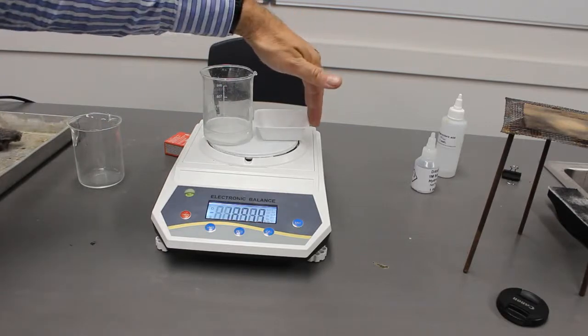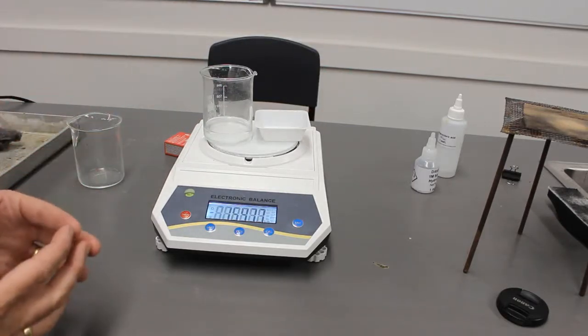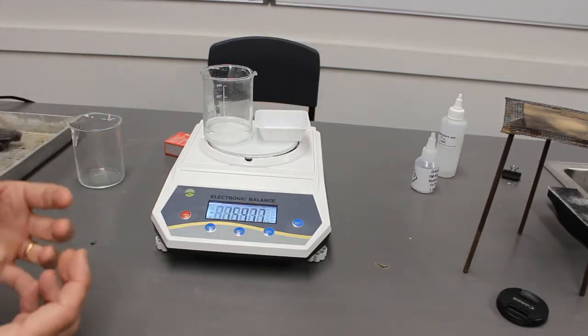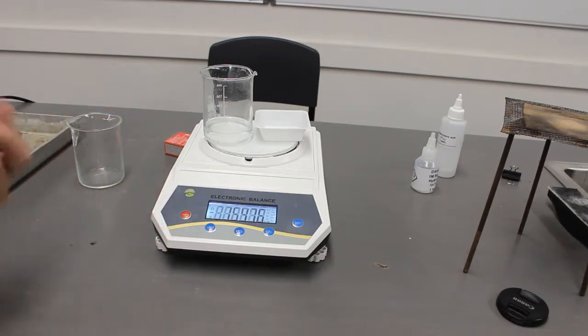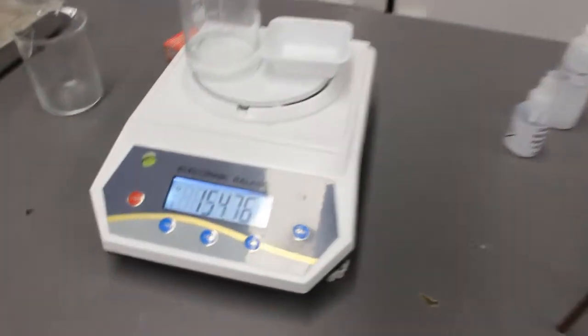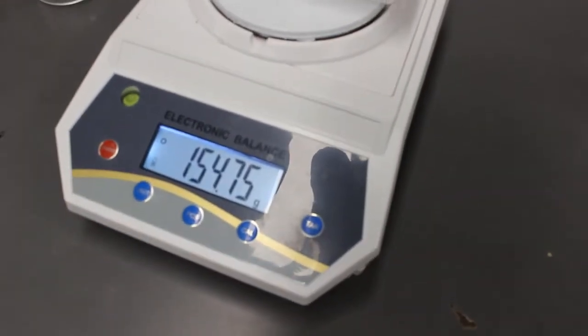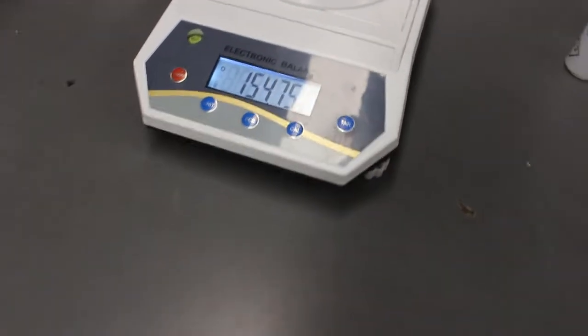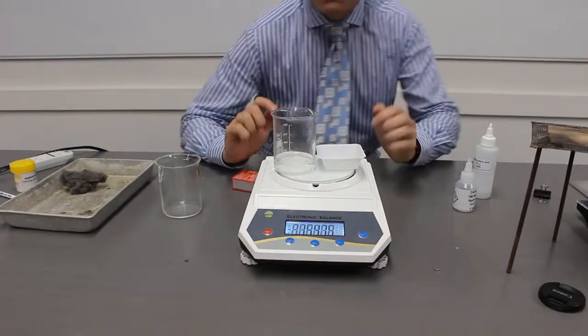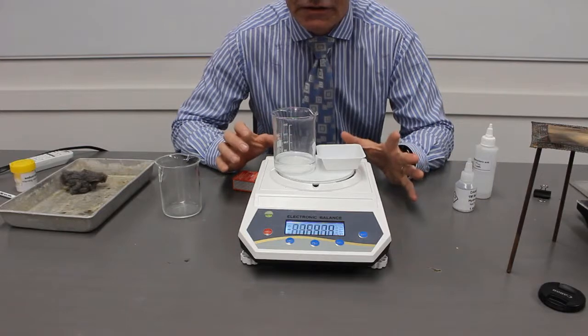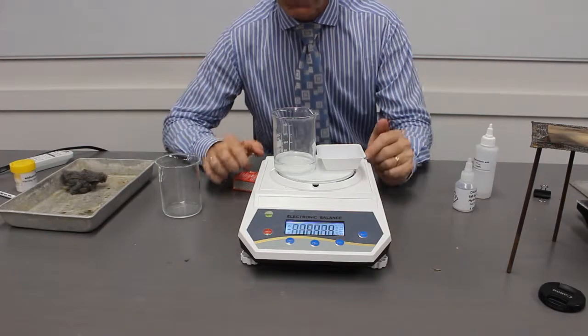So we can see that fizz means that bubbles are being produced. And those bubbles are gas. So let's have a look at the mass now. 154.75. So we've actually had a reduction in mass. So the mass has actually decreased. Why has it decreased?